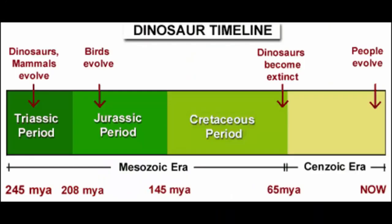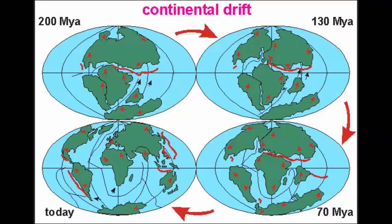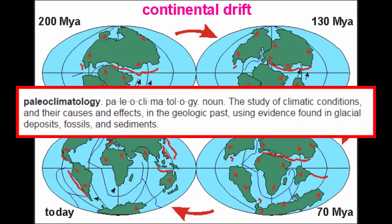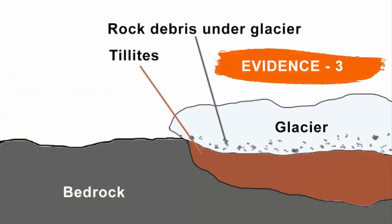Since it is not possible to go back in time to see what climates were like, scientists use imprints like these that were created during past climates to conclude that continents are really drifting away. Paleoclimatology is the study of past climates. Therefore, Tillite forms the third evidence in support of the Continental Drift Theory.